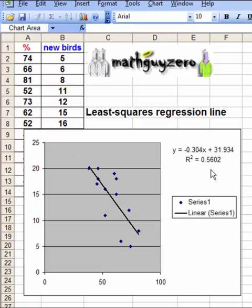That's how you get a least squares regression line out of Excel. MGZ, out.